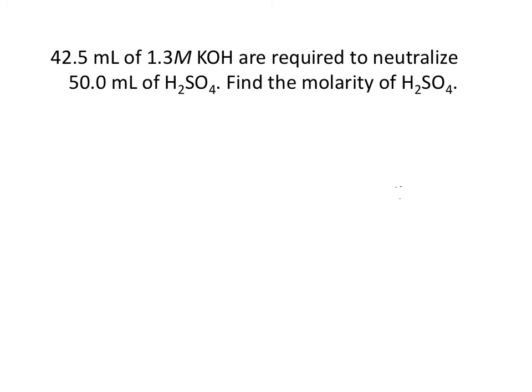Let's look at an example problem to practice titration calculations. 42.5 milliliters of 1.3 molar KOH are required to neutralize 50 milliliters of H2SO4. Our known base is in the burette, and H2SO4 is in the Erlenmeyer flask. We need to find the molarity of H2SO4.